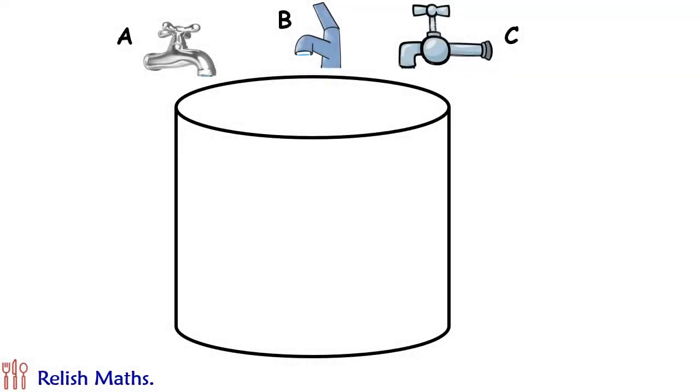Let's see this interesting question. We have a cylinder and 3 taps. All the 3 taps have different capacity: 20 liters per hour, 30 liters per hour, and 60 liters per hour.